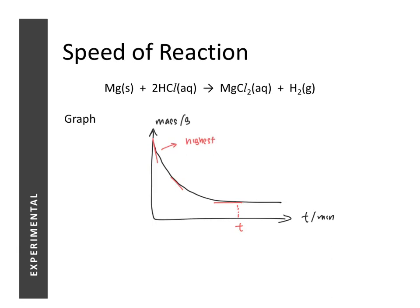Once again, the gradient of the tangent at the start of the reaction is called the initial rate. This initial rate is going to be very important when we compare graphs from different experiments involving a change in a certain factor. So we have looked at two things: the definition of speed of reaction, and how we can determine the speed of a reaction using experimental methods in the lab.